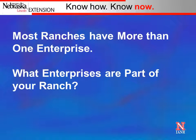Most ranches I work with have more than one enterprise. It's good to ask yourself: what enterprises are part of my ranch? Most ranches have some owned land base and rented land, a cow-calf enterprise, a hay enterprise, a stocker-yearling enterprise, and a replacement heifer development enterprise. They may also take cull cows, develop open cows, and sell them as bred cows — another enterprise. Understanding the different enterprises on your ranch can really help you identify opportunities to make changes and improve.